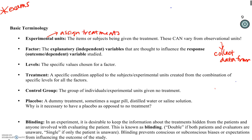Experimental units differ from observational units because experimental units are who we assign treatments to. I'm going to give you a made-up example of how these two groups could be different. Let's use CTs as an example — right now CTs are done as an observational study; they just give a CT to any teacher that's willing and has a class that works at a good time.